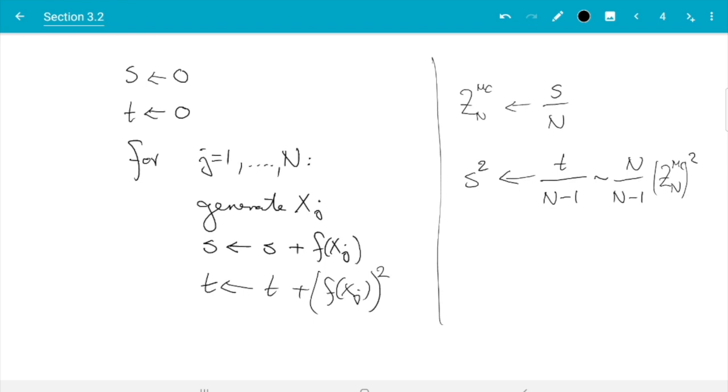Using this trick we have now simultaneously computed the mean of the f(X_J) and the sample variance of the f(X_J). In the next section we will see how the sample variance of the f(X_J) can be used as part of the method to estimate the estimation error, to assess how close that Z_N^MC is to the true expectation of f(X).